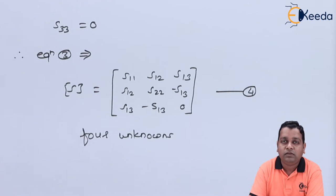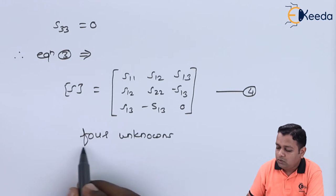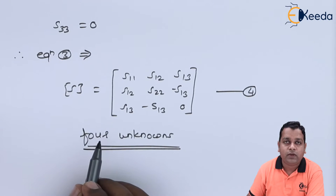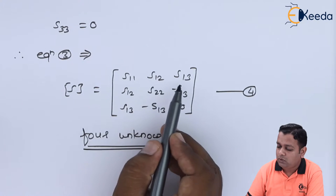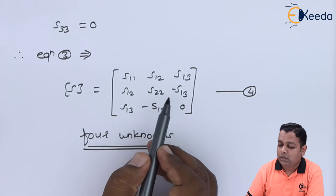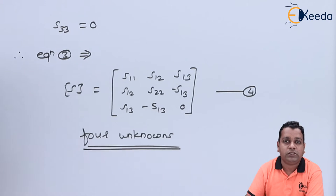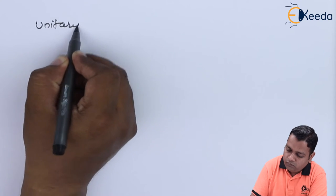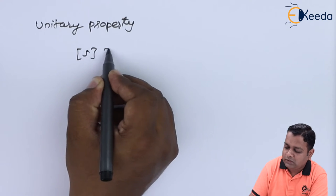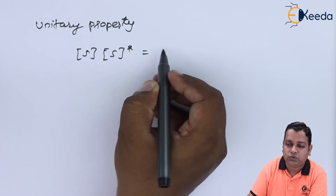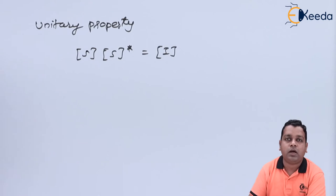Right from the nine unknowns in equation one, we have simplified the scattering matrix to four unknowns only: S11, S12, S13, and S22. We can now make use of the unitary property. As per the unitary property, the scattering matrix multiplied by its complex conjugate results in the identity matrix.